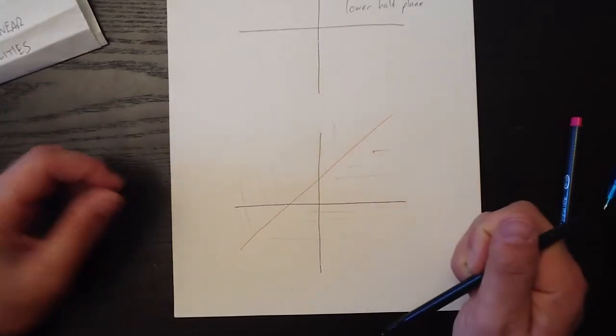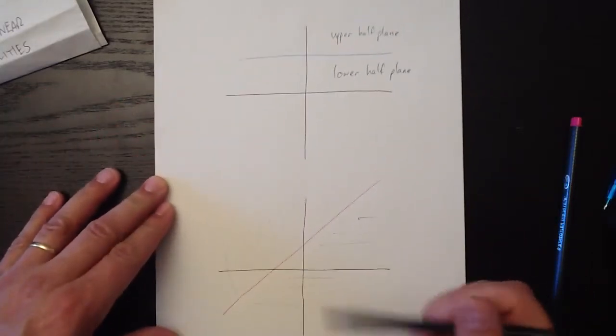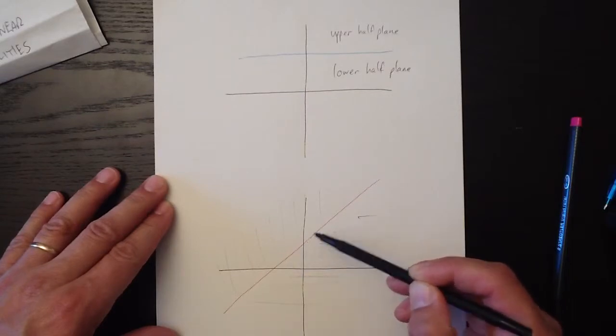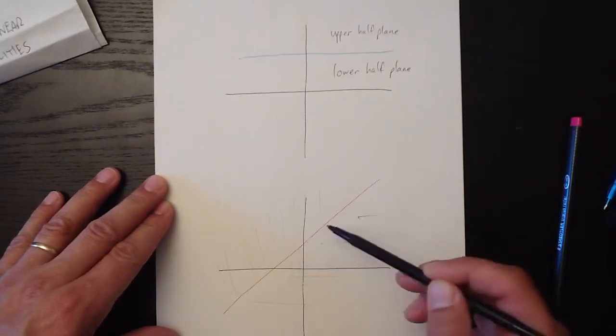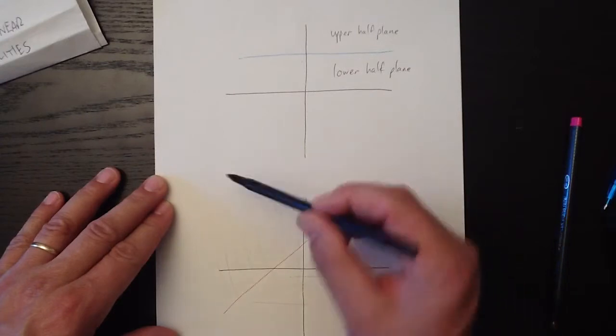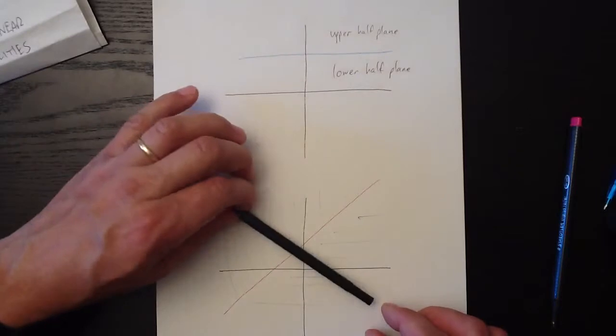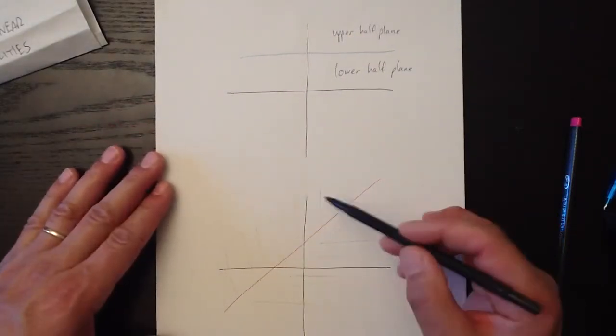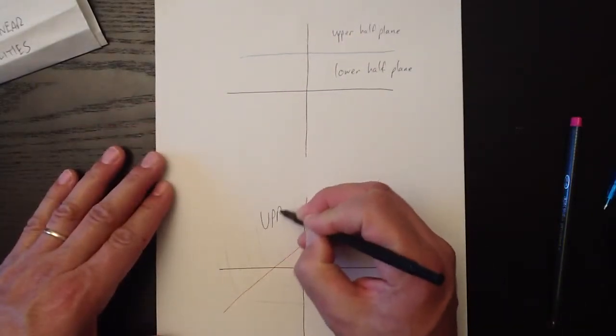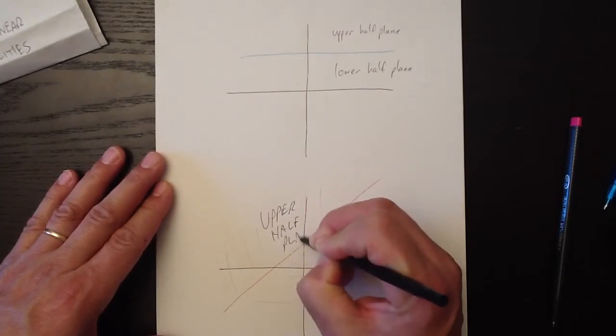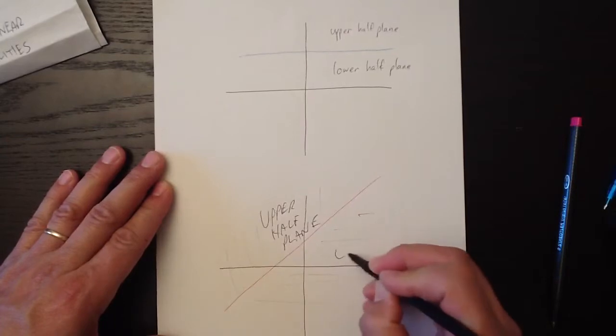So the wizards over in the math department have decided that whenever you have a line that's not vertical, so this diagonal line is not vertical, and if it went the other way like a negative slope like this it would still be not vertical, any time you have a not vertical line, this is called the upper half plane and down here is the lower half plane.